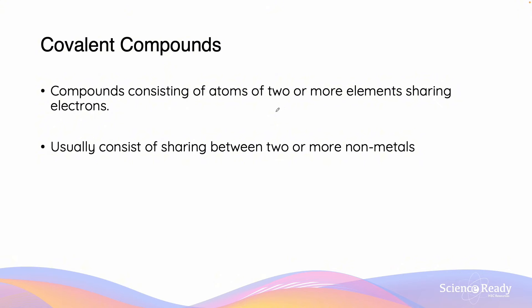Covalent compounds are compounds consisting of atoms that contain two or more elements which are sharing electrons. Usually they will consist of the sharing between two or more non-metals.